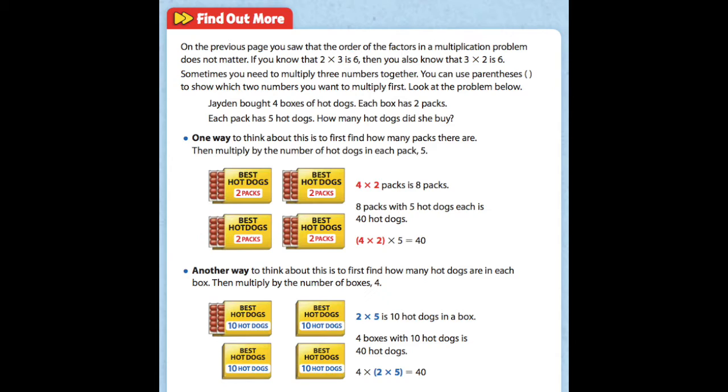So we've been talking about multiplication and we're going to continue doing that. On the previous page, which is what we did on Tuesday, we saw that the order of the factors in a multiplication problem does not matter. So if you know what 2 times 3 is, which is 6, then you also know what 3 times 2 is, which is also 6. It's kind of like our addition where we can flop them around and it doesn't really matter, right?